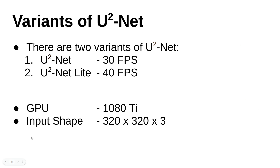There are two variants of U²-Net. The first is the normal U²-Net which achieves 30 fps. The second is U²-Net light version which achieves 40 fps on a 1080 Ti with an input shape of 320×320. That is a simple introduction to U²-Net. Now we will implement it in the TensorFlow framework.